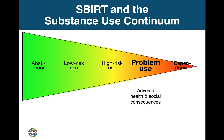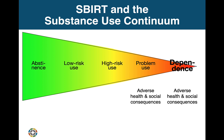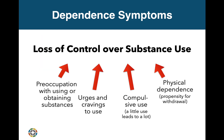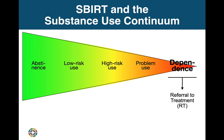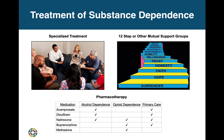Problem use is drinking or drug use that causes negative health and social consequences in people's lives. People in the dependent category usually have many of those consequences, but what distinguishes dependence is loss of control over substance use. Many dependent people can quit or cut down for a while but cannot do so consistently and durably without help. Research has shown that loss of control arises from changes in the pleasure reward system of the brain. Patients who are dependent should be referred for treatment. All patients with alcohol or opioid dependence should be offered pharmacotherapy, which we can administer in primary care settings, especially for patients who cannot or will not get treatment.